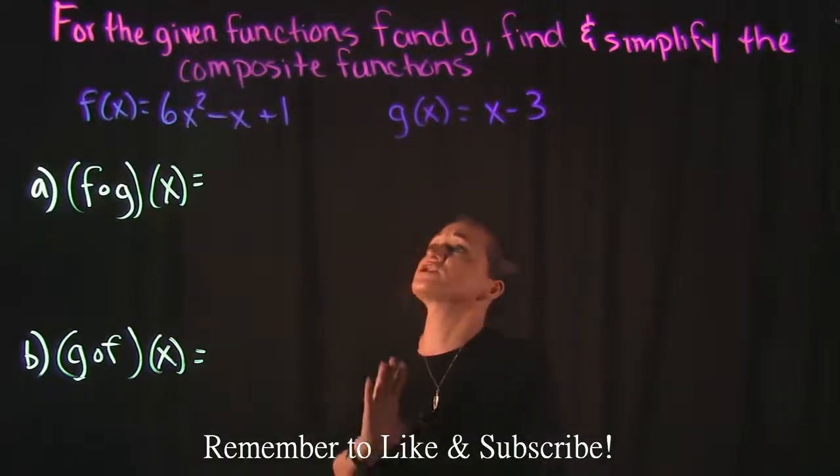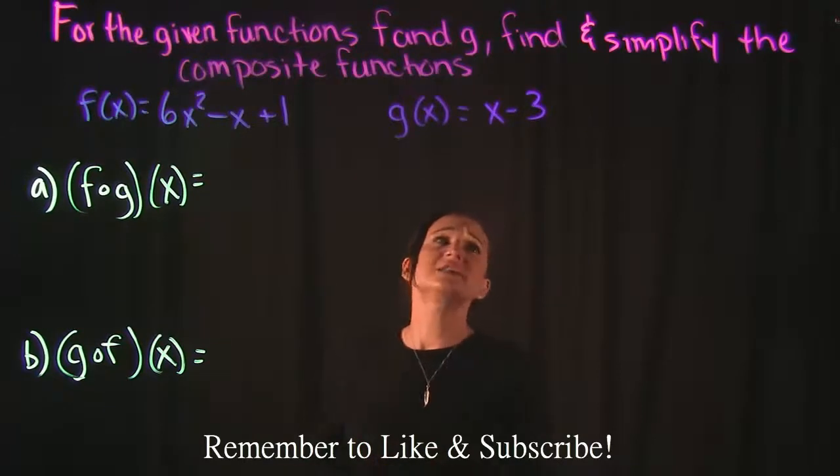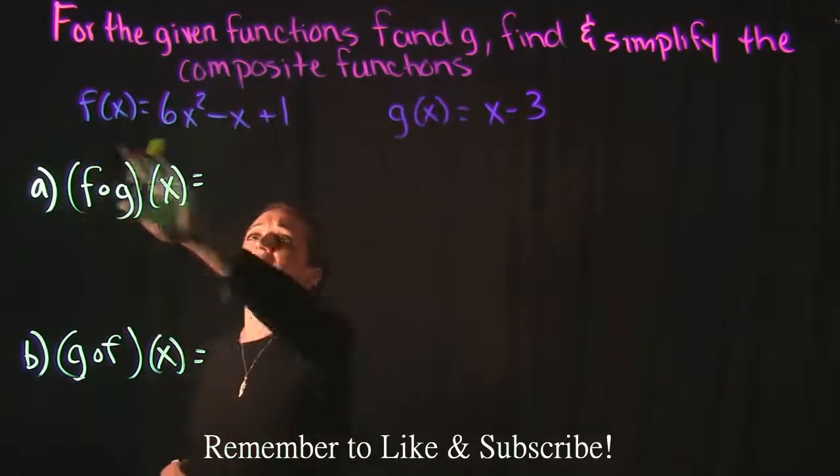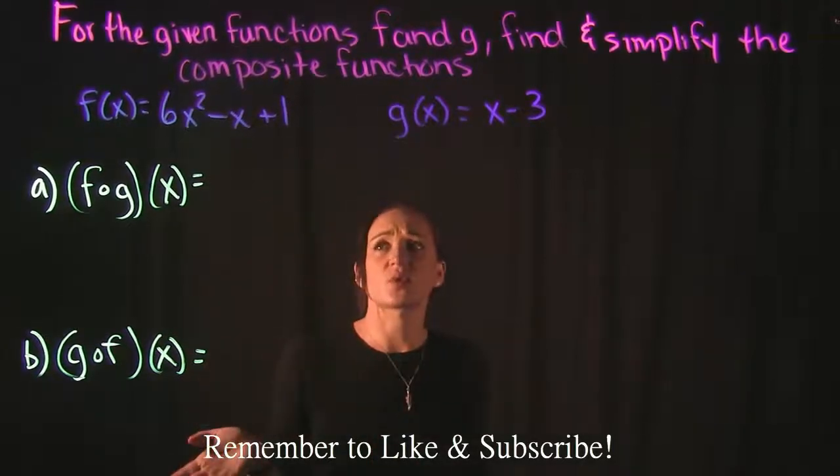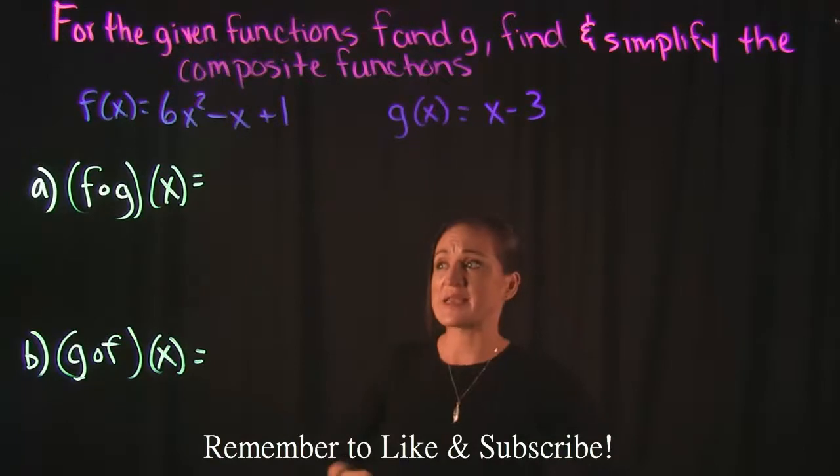So for this video the instructions say for the given functions f and g find and simplify the composite functions. We have f of x is equal to 6x squared minus x plus 1 and we have g of x is equal to x minus 3.